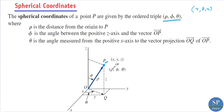Next, what is φ? The second coordinate φ is the angle between the positive z-axis and the vector from origin to P. That is, φ is the angle between the positive z-axis and the line or vector from the origin to P.